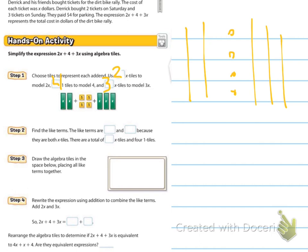And so, to find the like terms, the like terms are, if we were to count our sticks, find the like terms. The like terms are blank and blank because they are both X tiles. Alright, so, the 2 here and the 3 here are our X tiles. So, we're going to have our 2 and our 3 because they're both X tiles. And then, they're a total of 5X tiles.